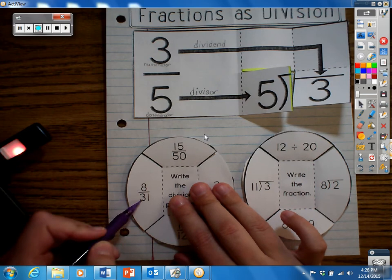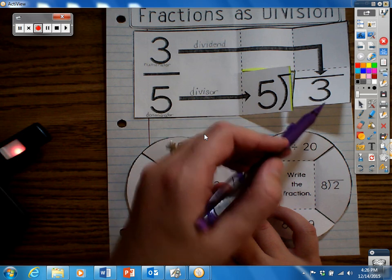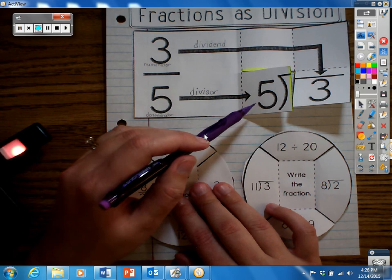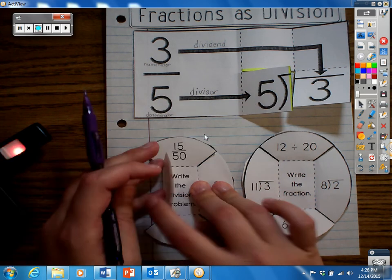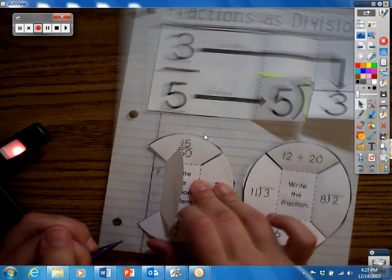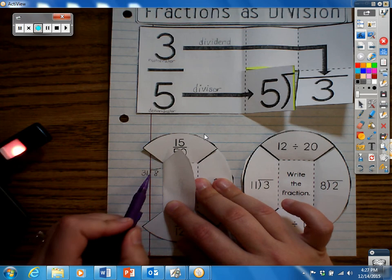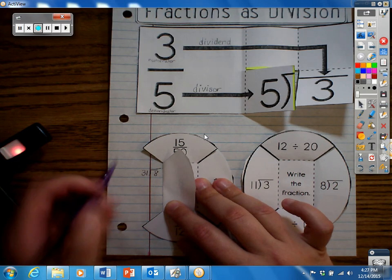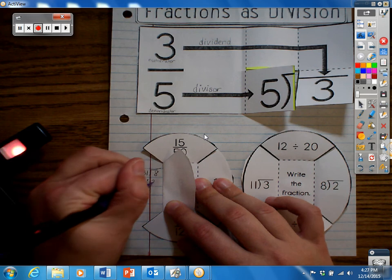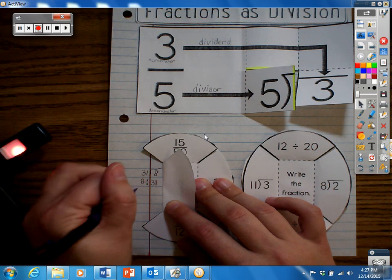Now remember, your numerator becomes your dividend or the number on the inside of your division problem, and your denominator becomes your divisor which is the number on the outside. So 8 and 31. This reads 8 divided by 31. We can also write it using a symbol, 8 divided by 31, as well as in word form.